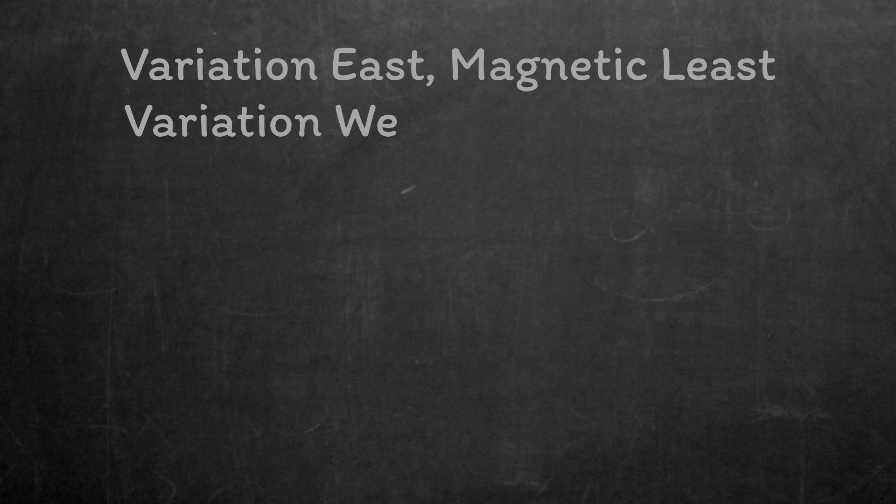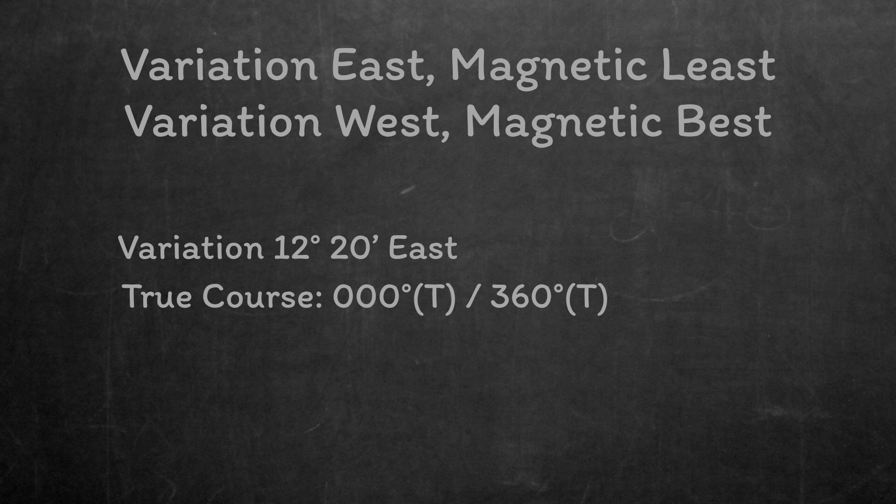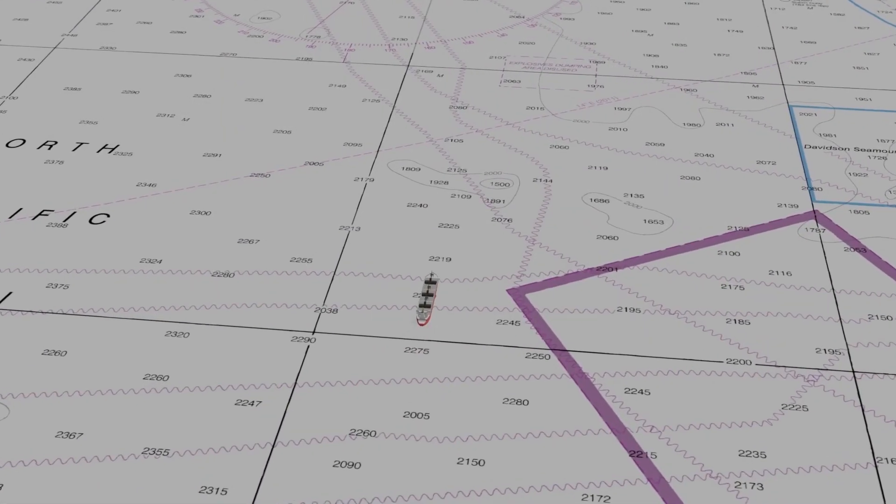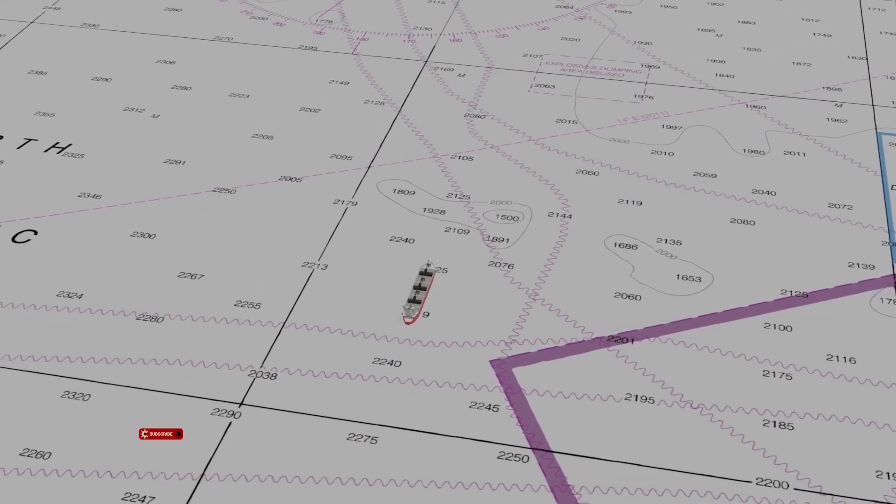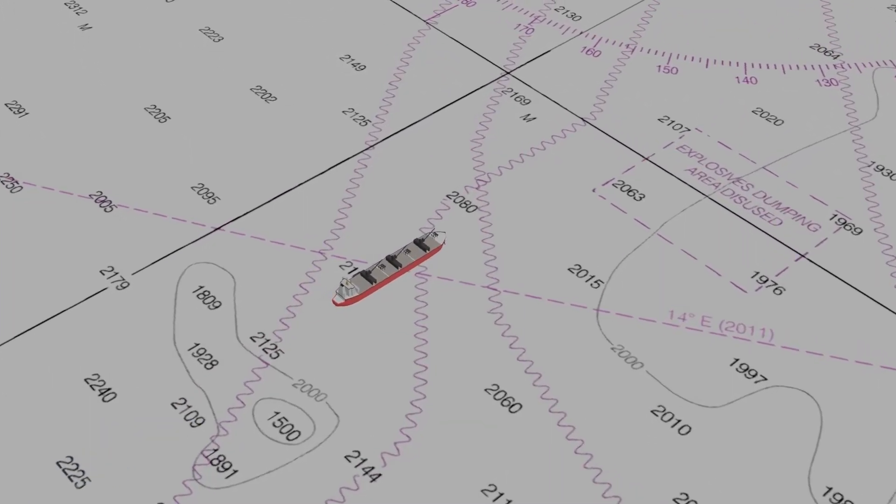Instead of using the diagram every time, there is a useful rhyme to help you remember the maths. Variation east, magnetic least. Variation west, magnetic best. In our case, variation was east, so the value of the magnetic course will be less than that of the true course. We took 12 degrees away from 360 degrees, making our magnetic course less than our true course. We could tell the helmsman to steer 348 degrees magnetic, and we would know the vessel would travel 000 degrees true.